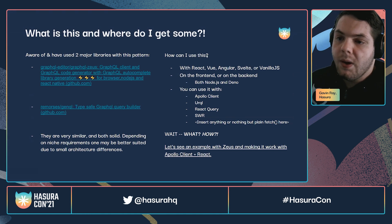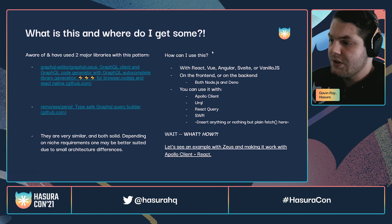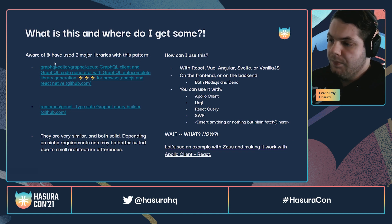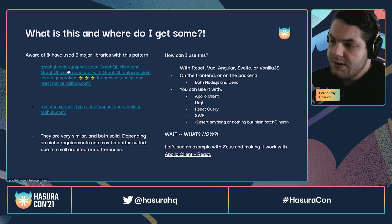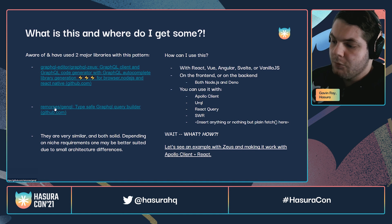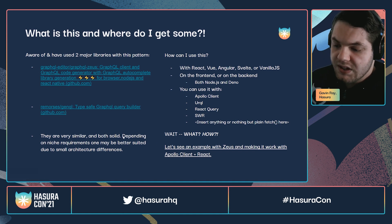So what are these tools and where do you get them? I'm aware of, and have used, two libraries with this pattern. The first is a library called GraphQL Zeus, and the other is a library called GenQL by a person named Remorses. They're very similar — evaluate them both.